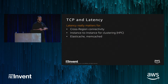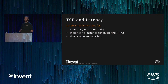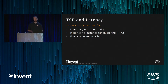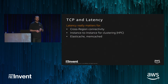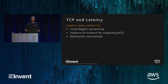This matters universally, but especially where latency is significant — for instance, cross-region connectivity where you're dealing with tens to hundreds of milliseconds of latency. It also matters for high-performance computing and clustering — things like ElastiCache and Memcached are clusters where the bottleneck is often inter-node communication, sometimes measured in microseconds. In those scenarios, latency really matters.